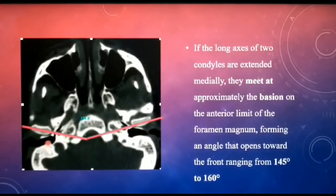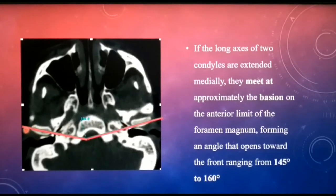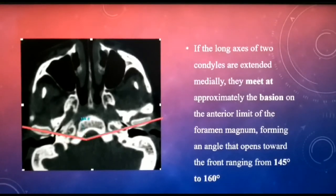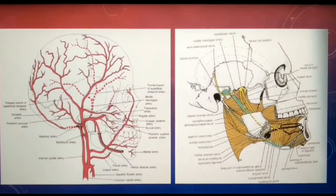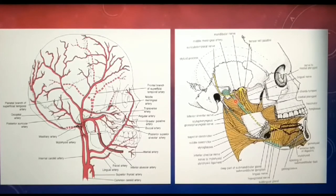The angle formed by the two condylar axes varies between 145 and 160 degrees. This is seen on an axial CT section showing cross sections of both condyles — the two condylar axes meet at the foramen magnum at that angle. The vascular supply to the TMJ arises anteriorly from the masseteric artery and posteriorly from branches of the superficial temporal and maxillary arteries, all branches of the external carotid artery. Nerve supply is from the auriculotemporal nerve with additional innervation from the masseteric and deep temporal nerves.